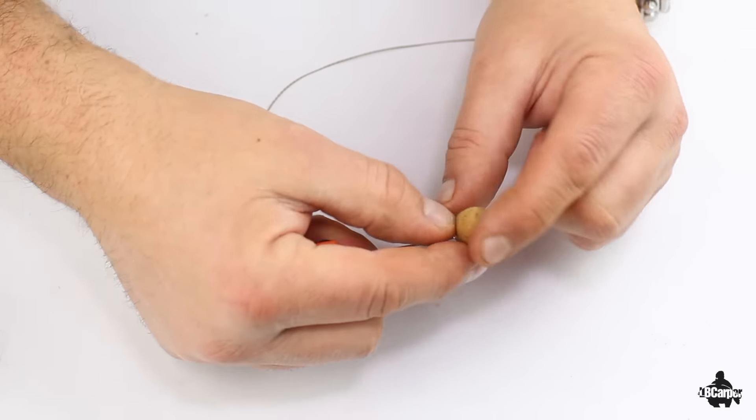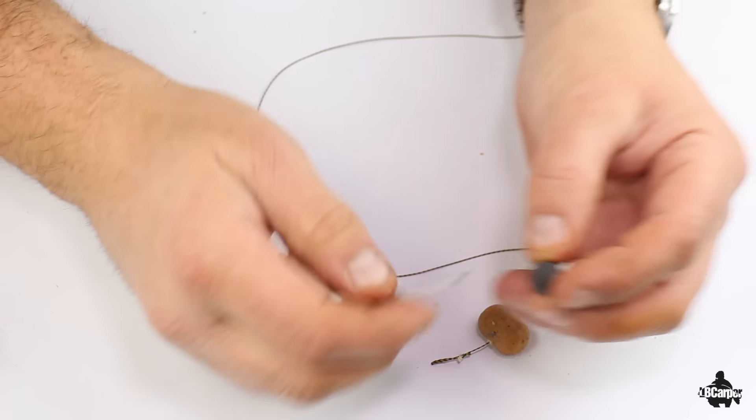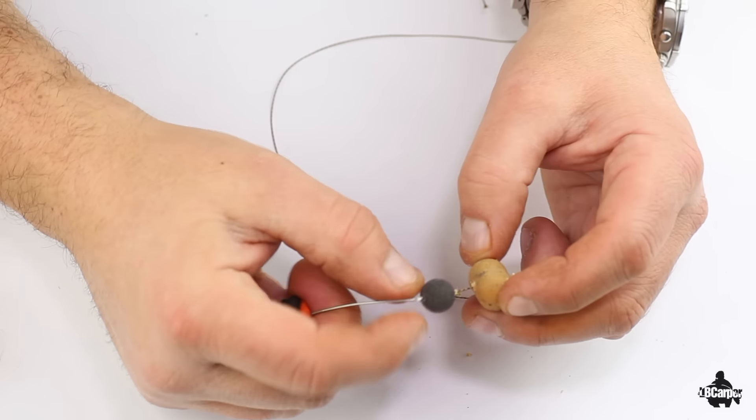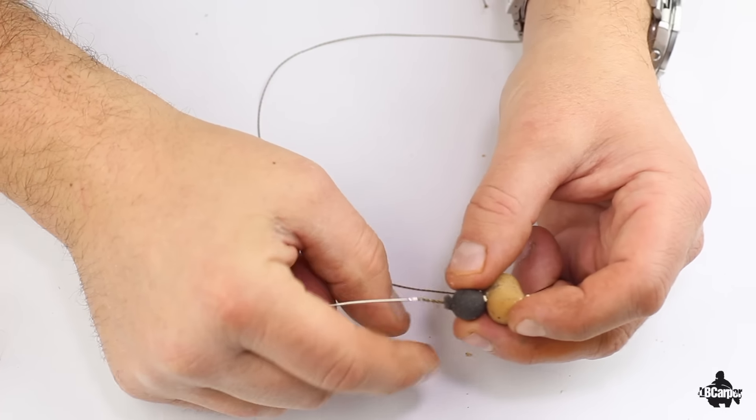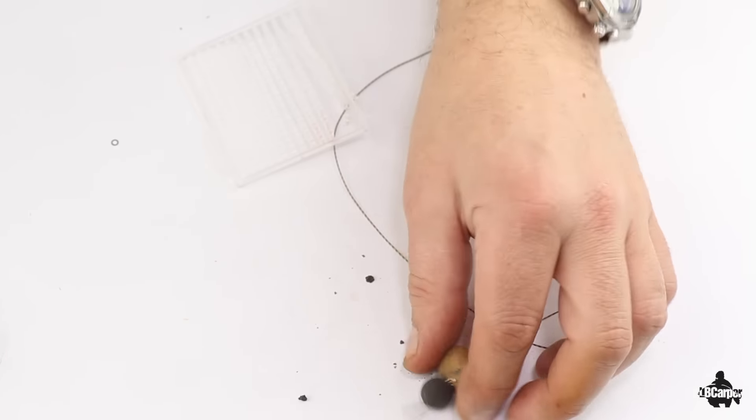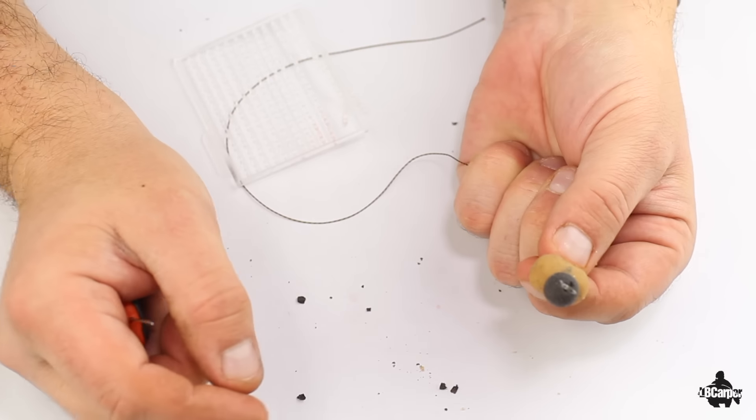We thread that onto the braided loop, then we thread the pop-up on as well. There you go, there's the pop-up, little bait stop in the end there. That's the first part done.